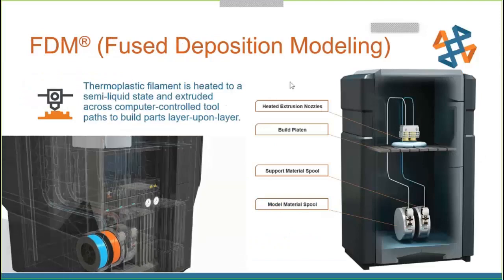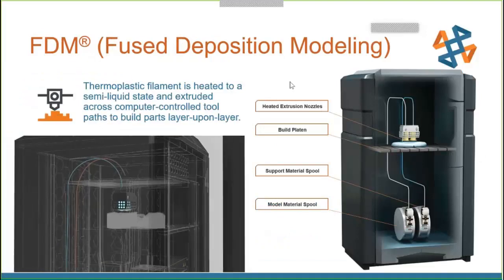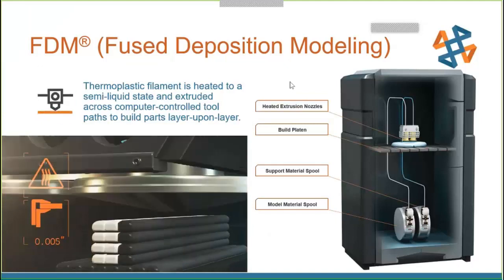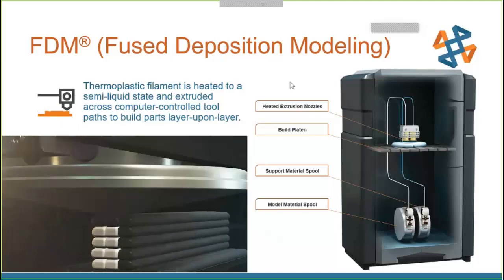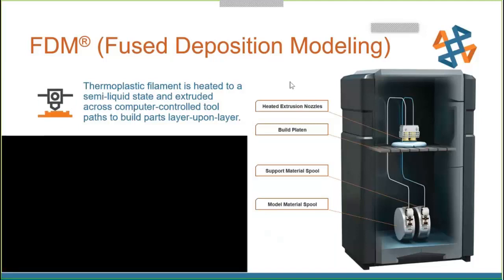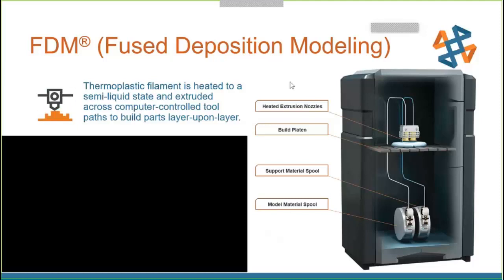Fused Deposition Modeling is where Stratasys started. It takes a filament line, melts it, and extrudes it to build your 3D part. You have a model spool and a support spool made out of different materials. This aids enormously with separating parts from supports. Many cheaper FDM machines have one material, making it very difficult to separate part from support.